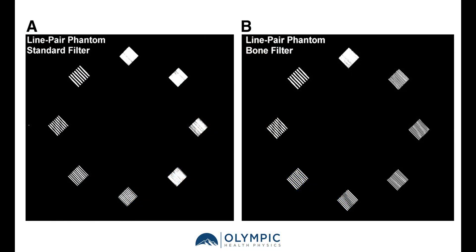In the example we have here, we're looking at the resolution pattern in a CT phantom — looking at how well the system can display detail in the image. In the image on the left, where we're using a standard filter, we can actually see down to the seven line pair target.